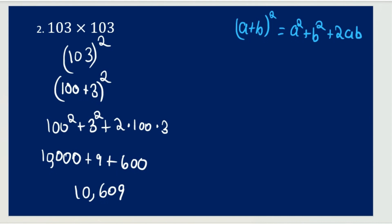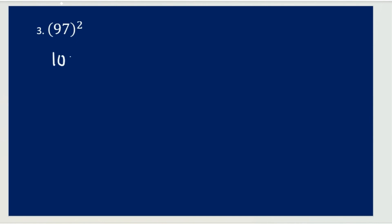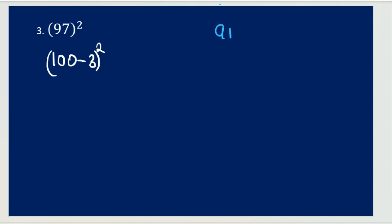Now let's move on to the third question. It is 97 whole square. For these types of questions, you would basically just do 97 times 97 the simple way. But now we're going to get a simpler and faster way. Again, 97 can be written as 100 minus 3, then it's going to be a whole square. What formula do we normally think of when we see this expression? We should be thinking of A minus B whole square equals A squared plus B squared minus 2AB.